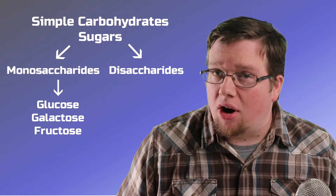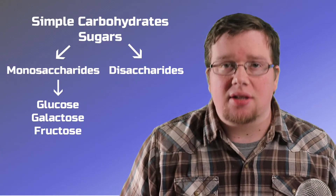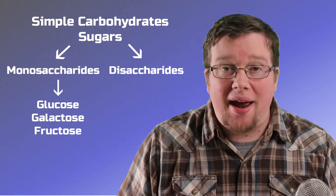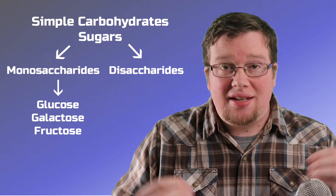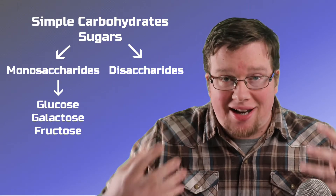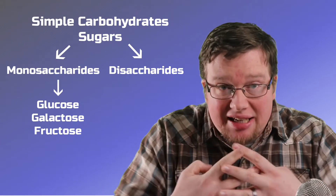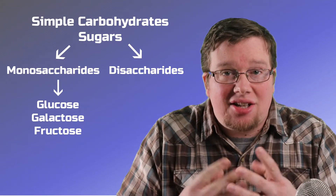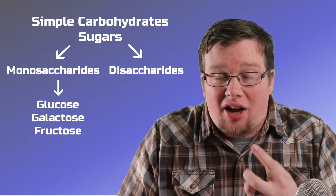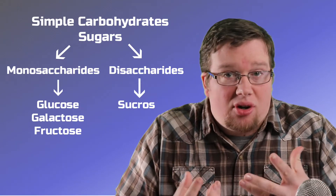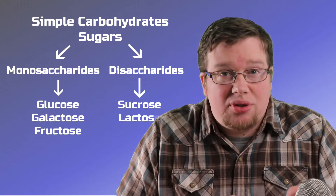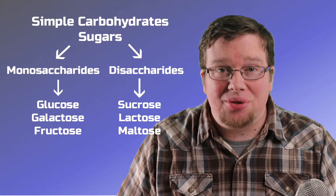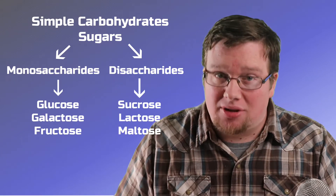The other group of simple carbs, disaccharides, are a pair of monosaccharides linked together. Disaccharides include other forms of sugar called sucrose, lactose, and maltose.